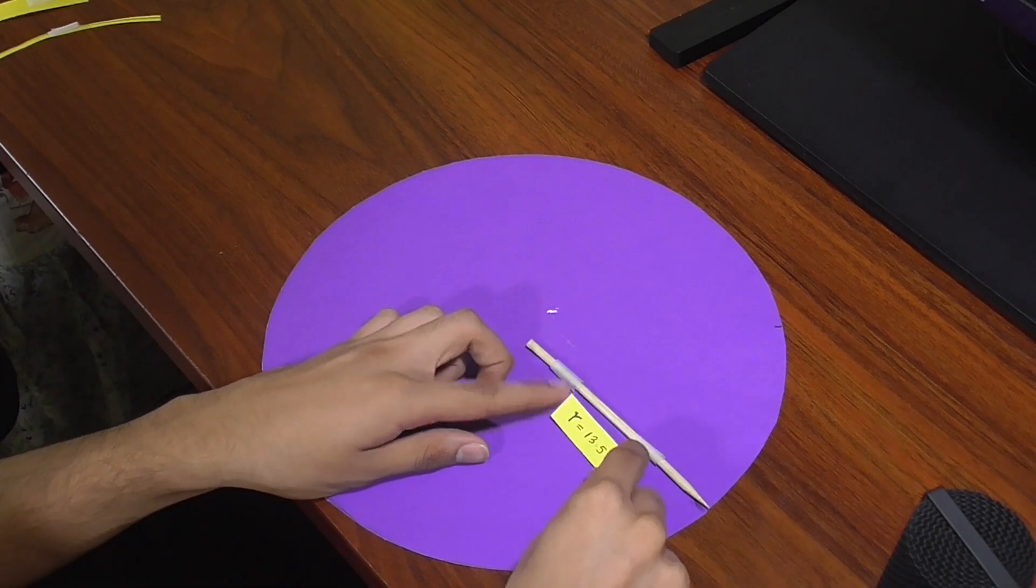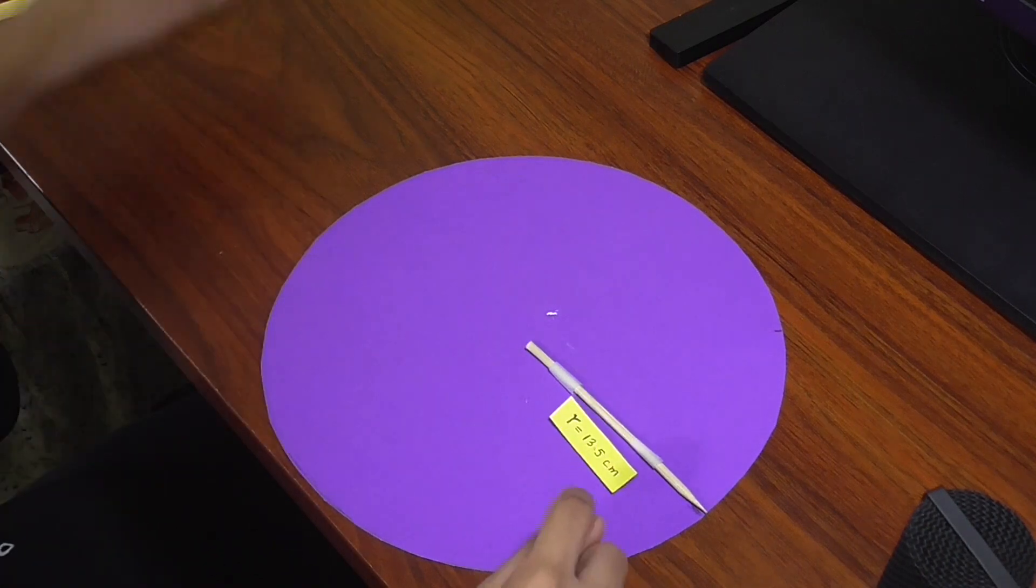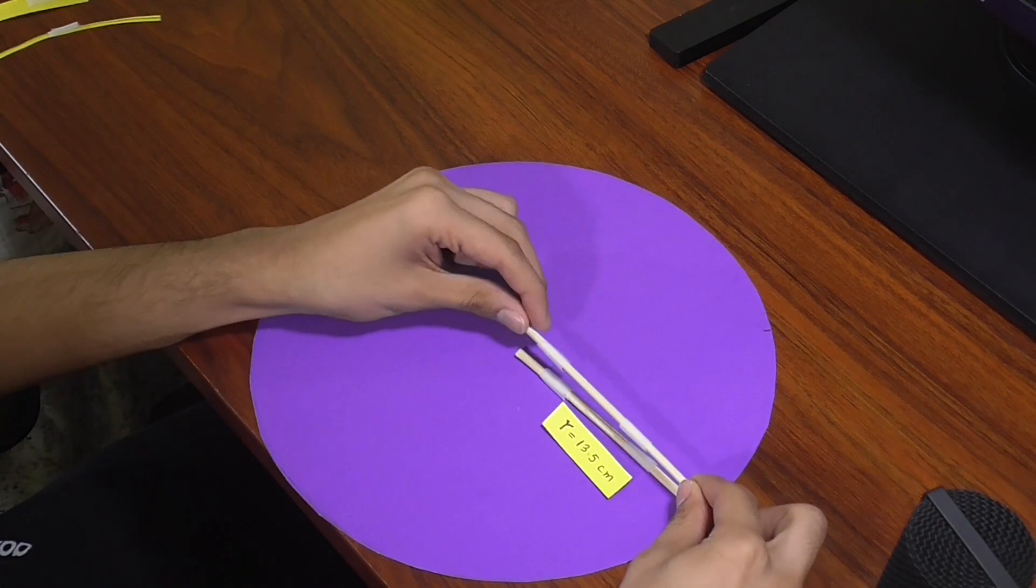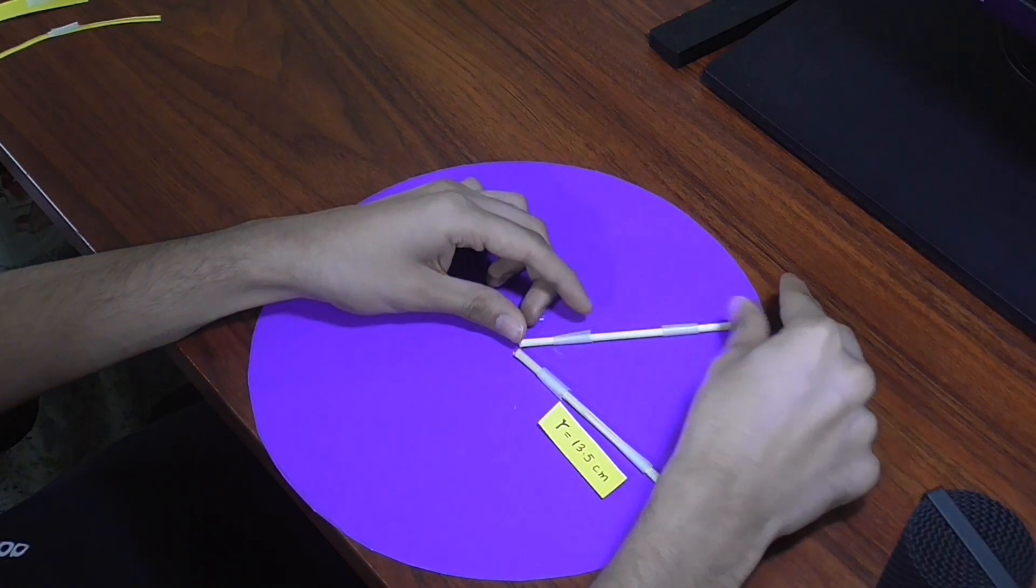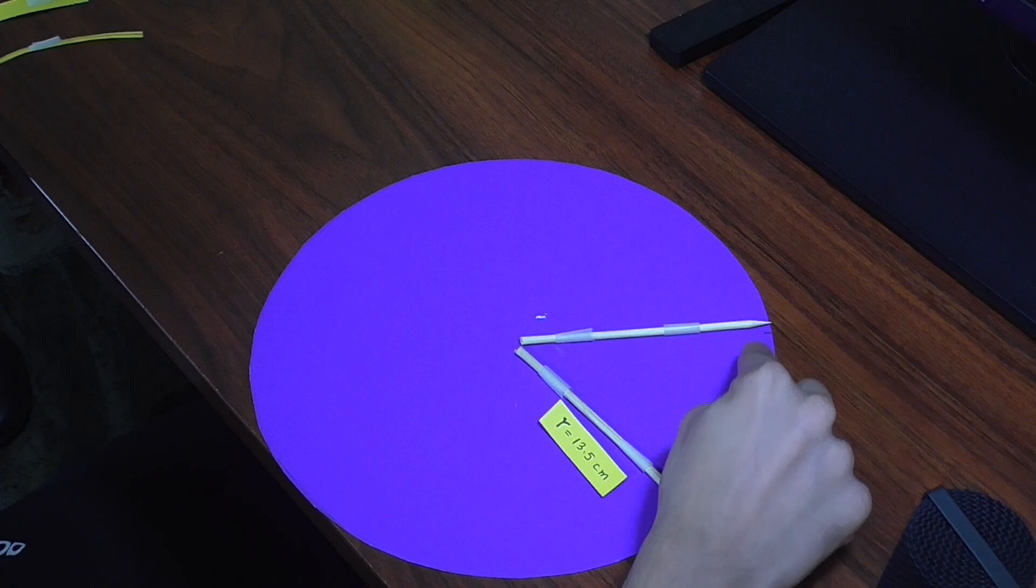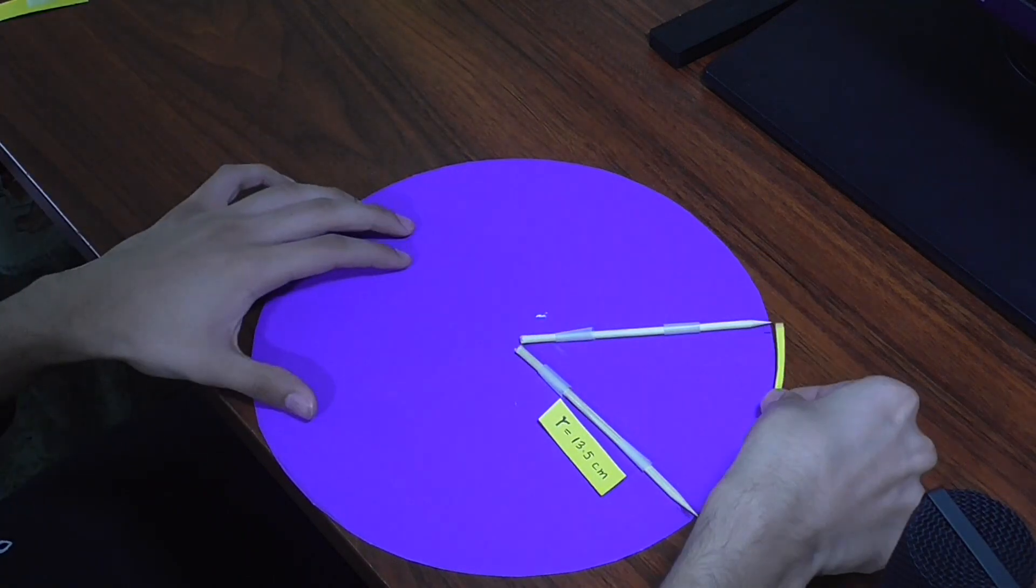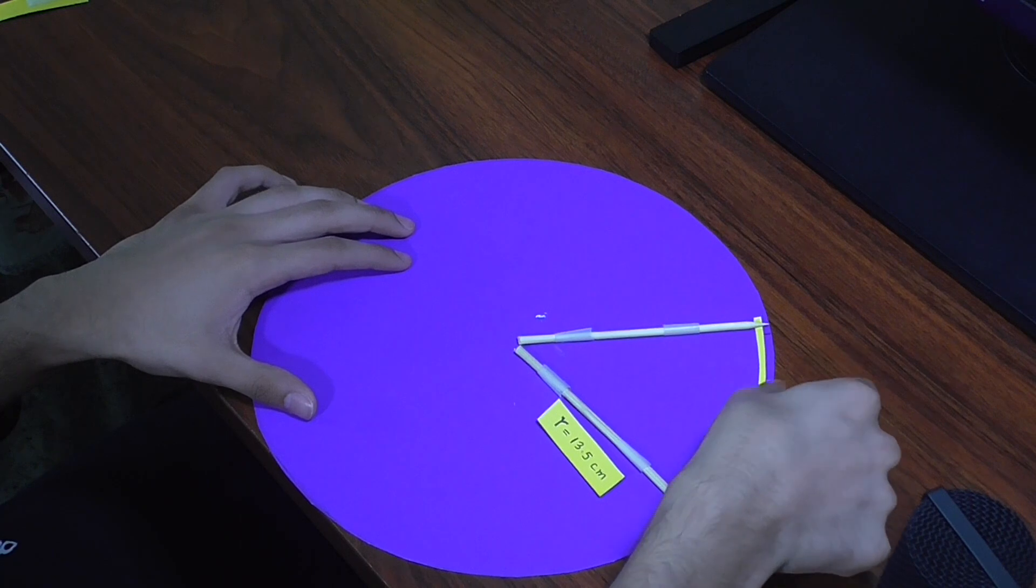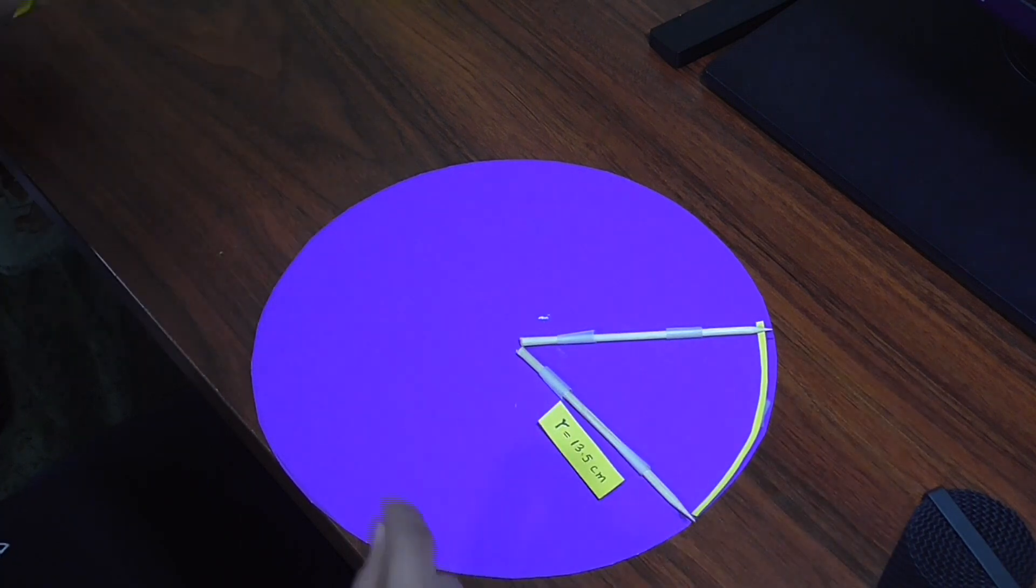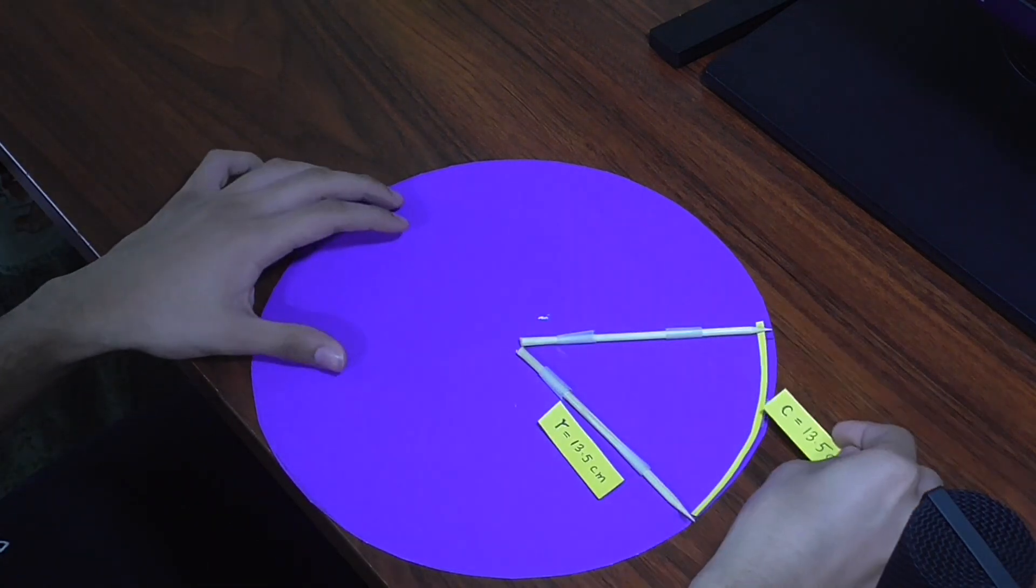The radius is 13.5 centimeters. We traverse it around the center so that this arc length is also 13.5 centimeters.